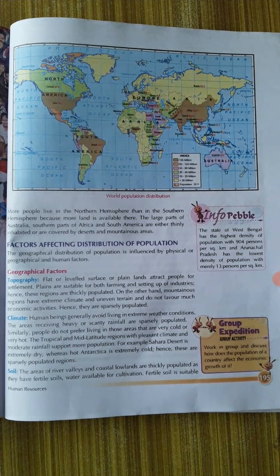Flat or leveled surfaces, or plain lands, attract people for settlements. Plains are suitable for both farming and setting up of industries. Hence, these regions are thickly populated. On the other hand, mountainous regions have extreme climate and uneven terrain and do not favour much economic activities. Hence, they are sparsely populated.